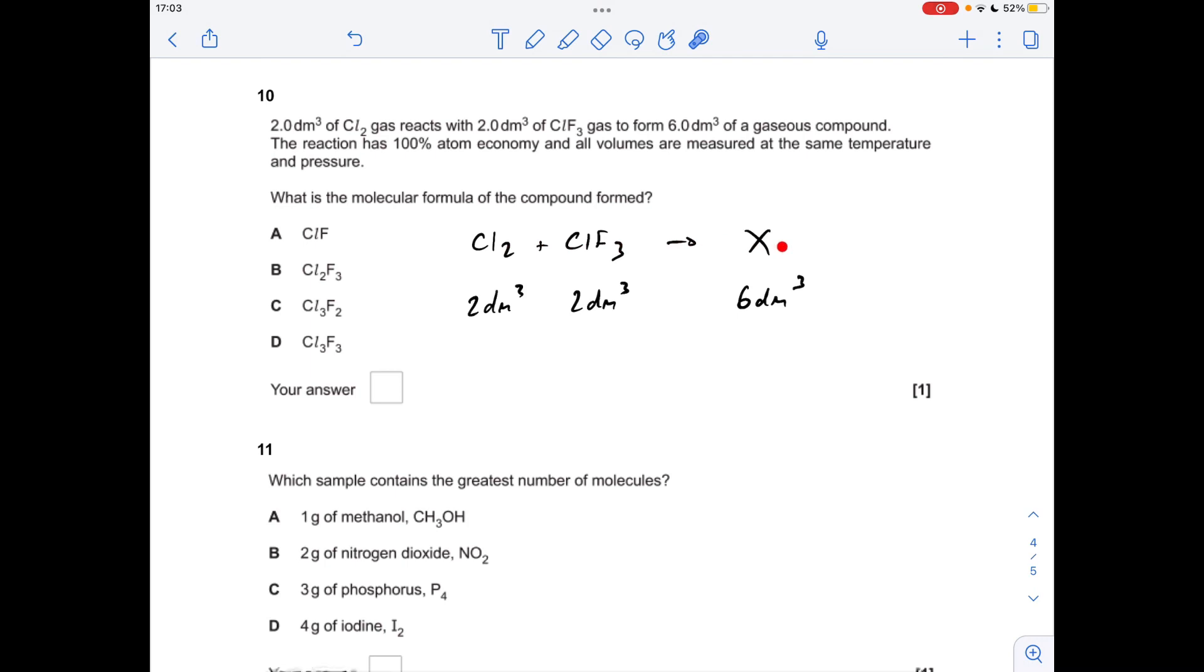Number 10 now. So I've made up this equation, I'm not specifying the formula of the gaseous compound just yet. We know that it's 100% atom economy, so all of these atoms go in to make this gaseous compound. So I think the immediate temptation there would be to just add everything together and get Cl3F3, which is option D. That's not the right answer, I'm afraid. So we've got to use these volumes to help get the answer. These are reacting in a 1 to 1 ratio.